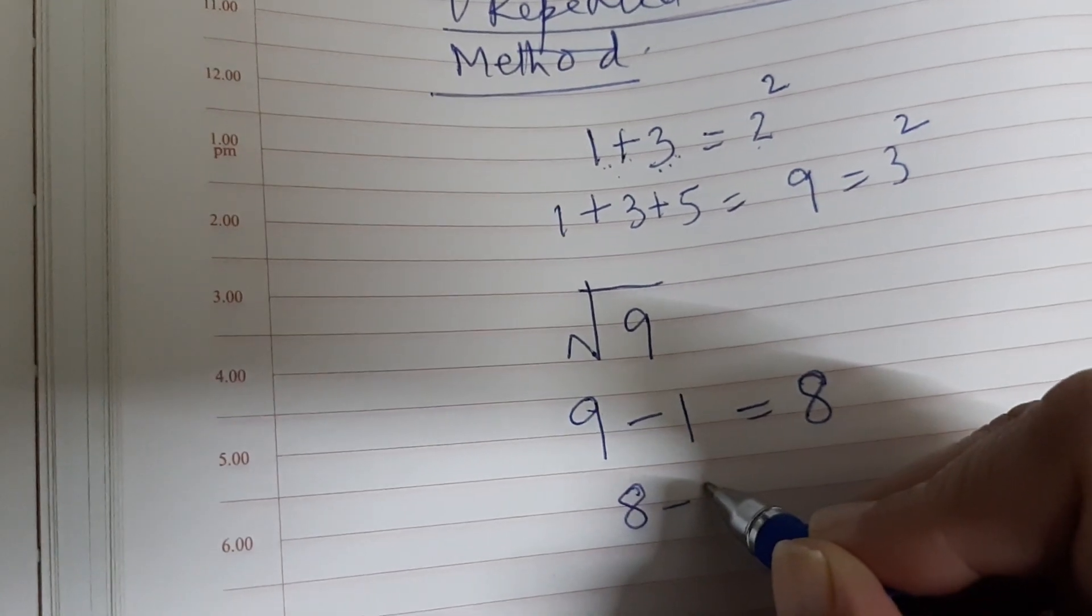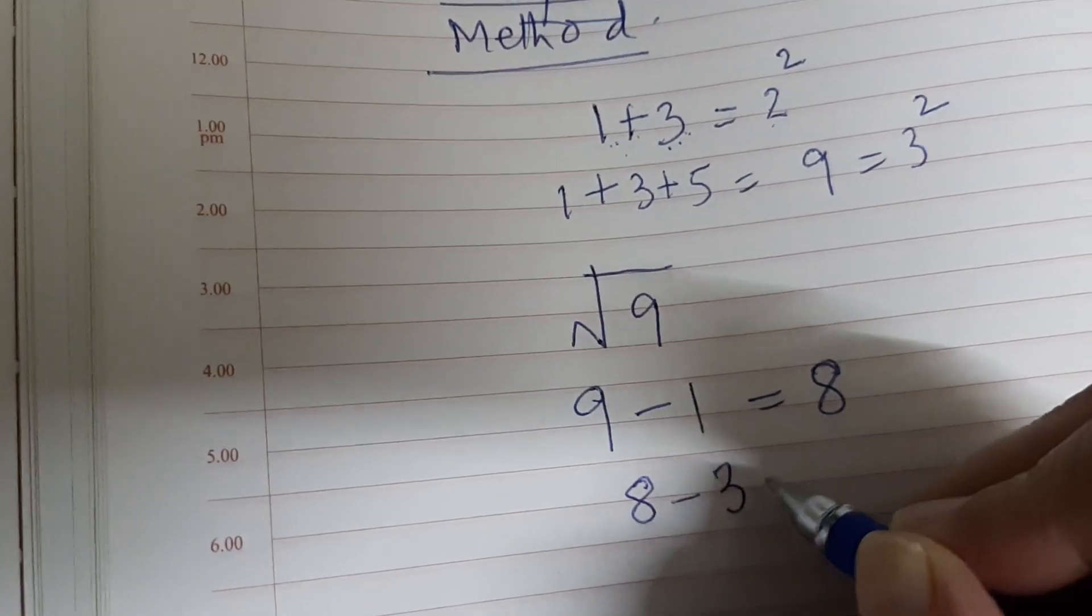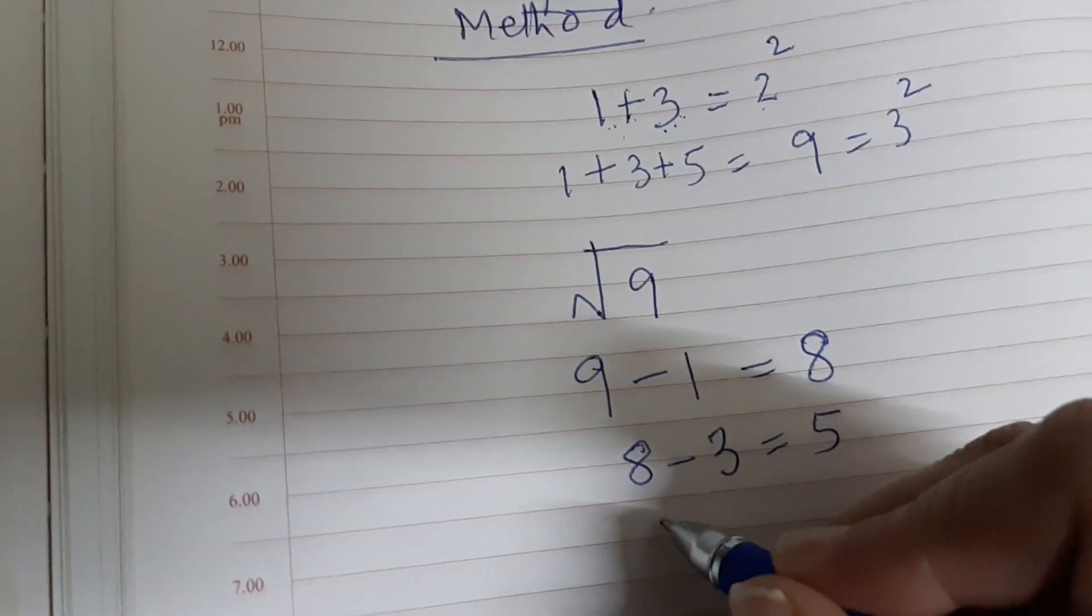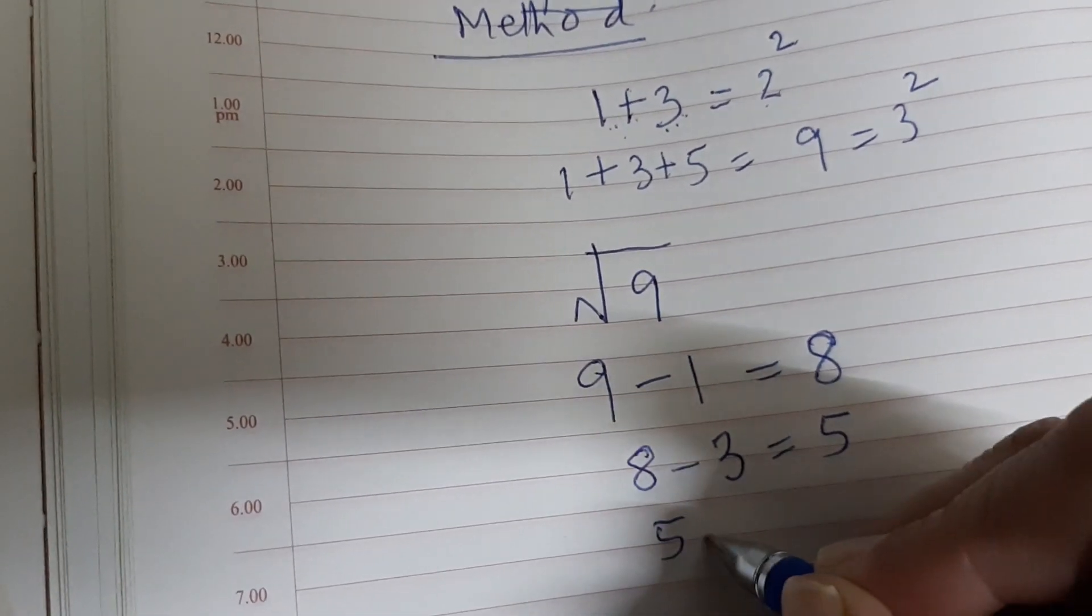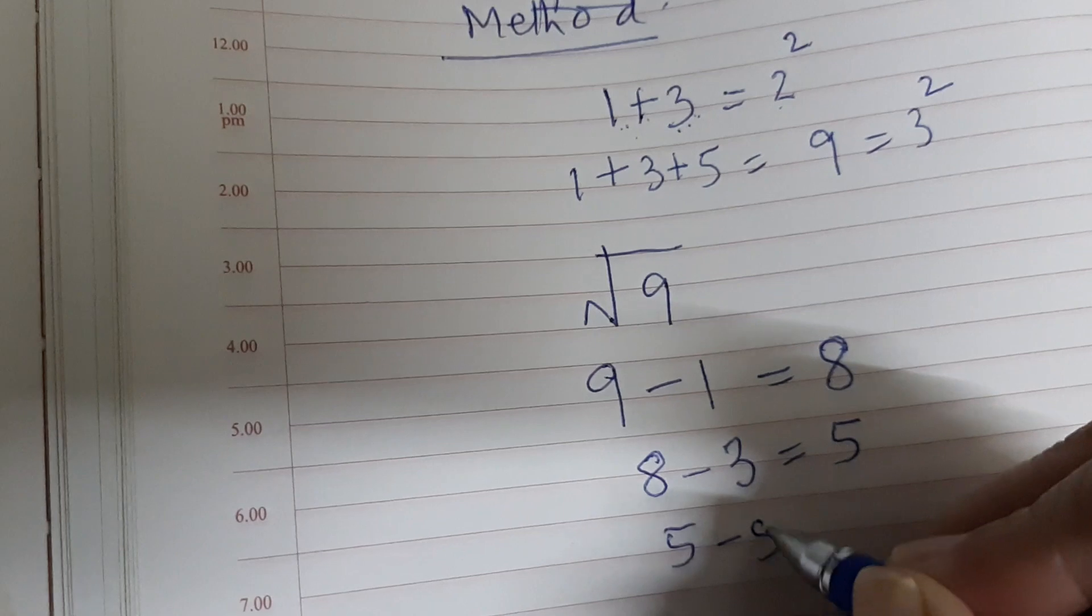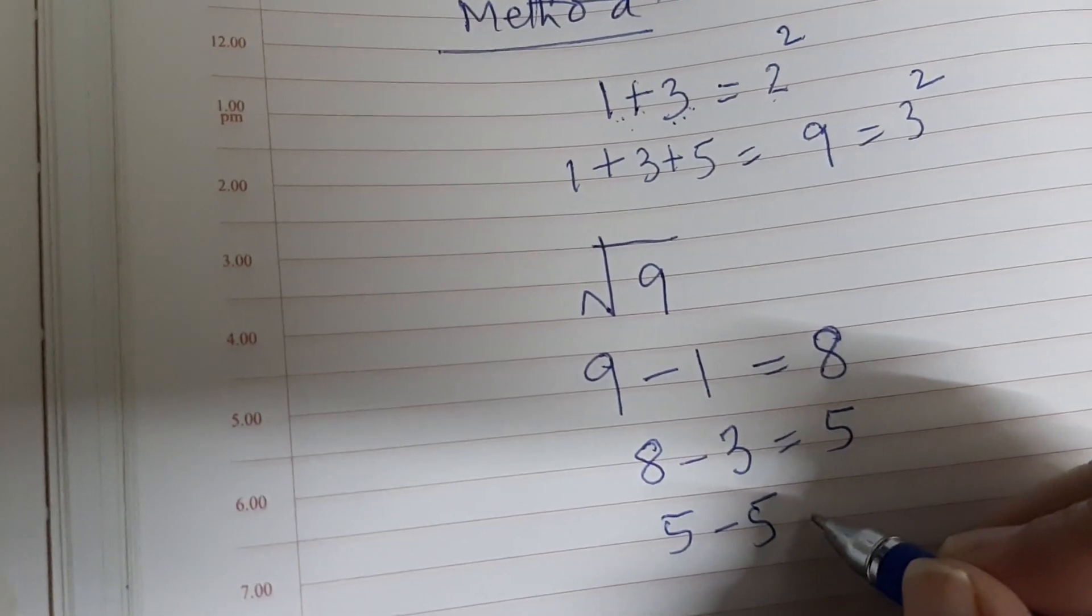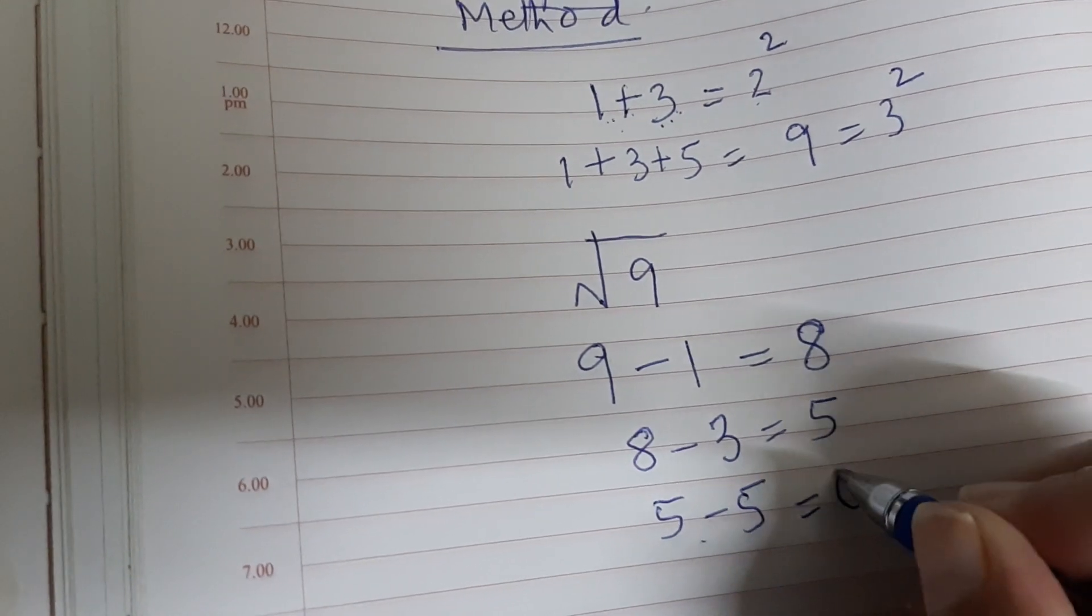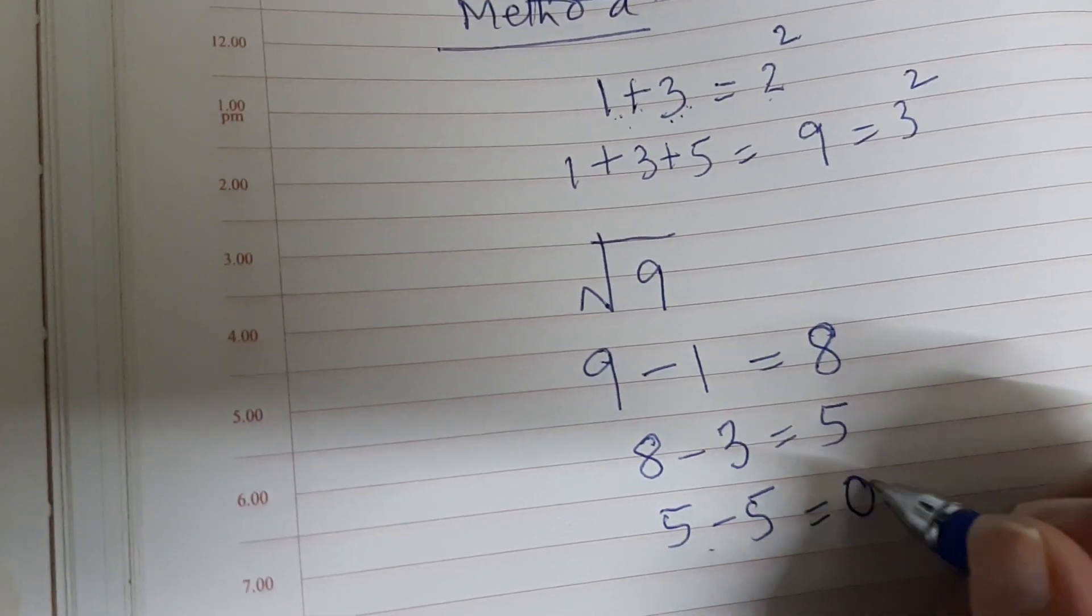Now begin with 5 and subtract the next odd number, which is 5. So 5 minus 5 equals 0. Observe that we have got 0. We have subtracted from 9 the successive odd numbers 1, 3, and 5 and obtained 0.